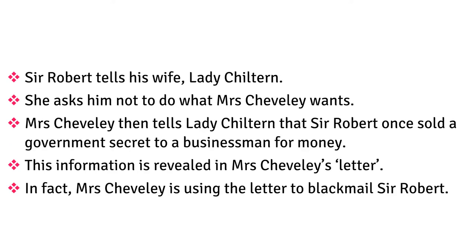Sir Robert tells his wife, Lady Chiltern, who asks him not to do what Mrs. Cheveley wants. Mrs. Cheveley then tells Lady Chiltern that Sir Robert once sold a government secret to a businessman for money — information revealed in Mrs. Cheveley's letter. In fact, Mrs. Cheveley is using the letter to blackmail Sir Robert.